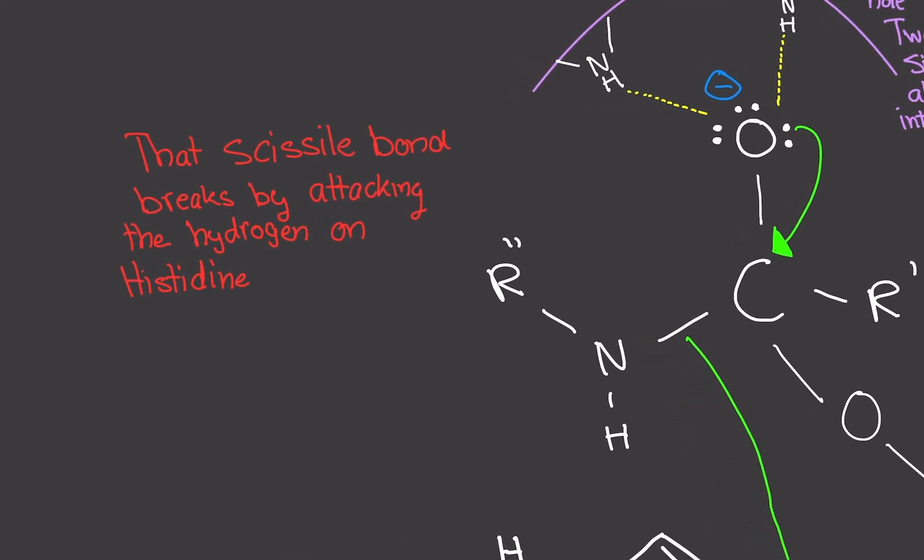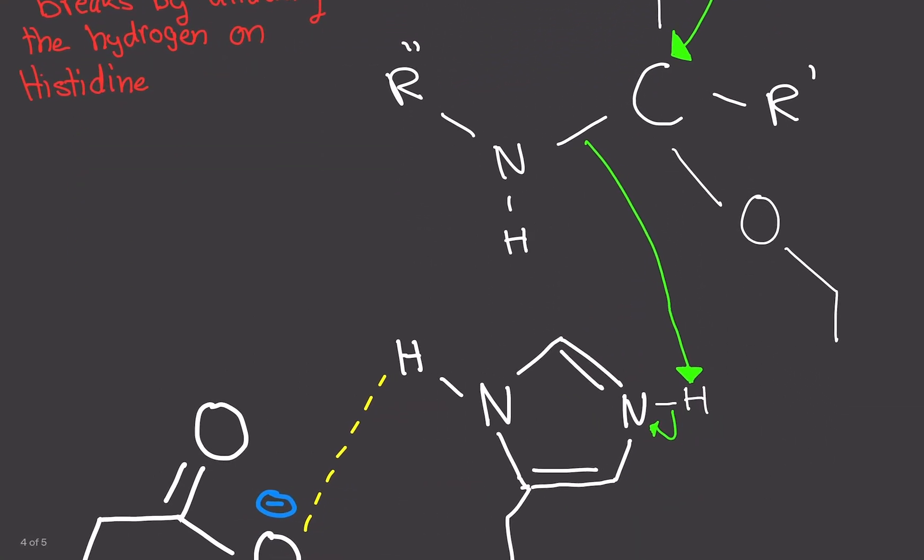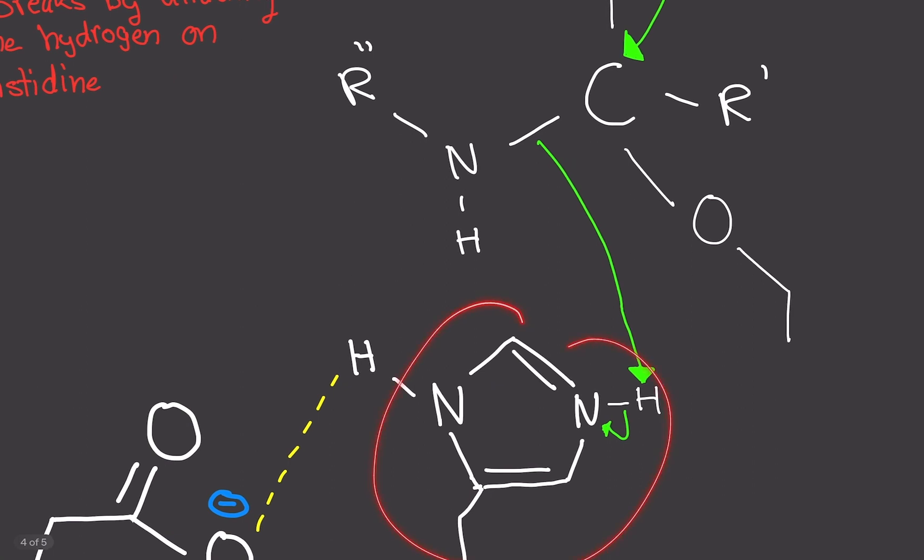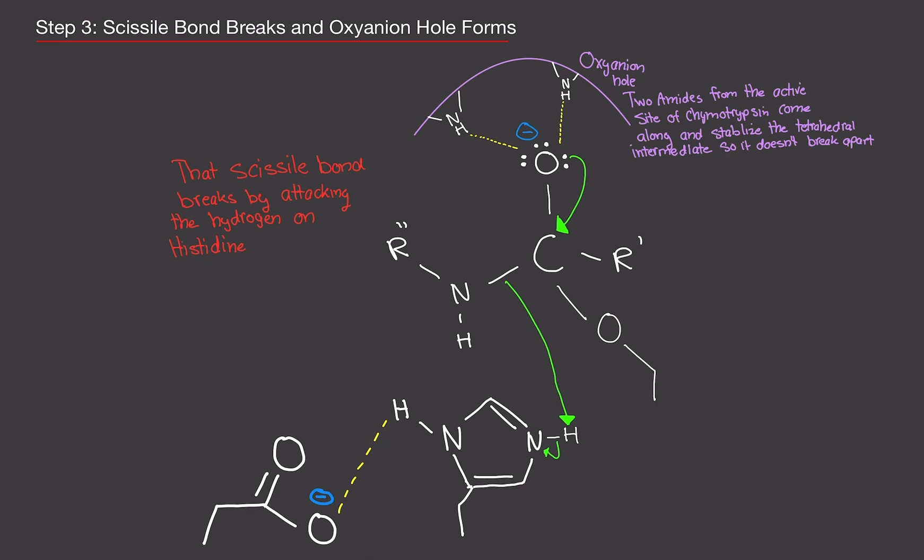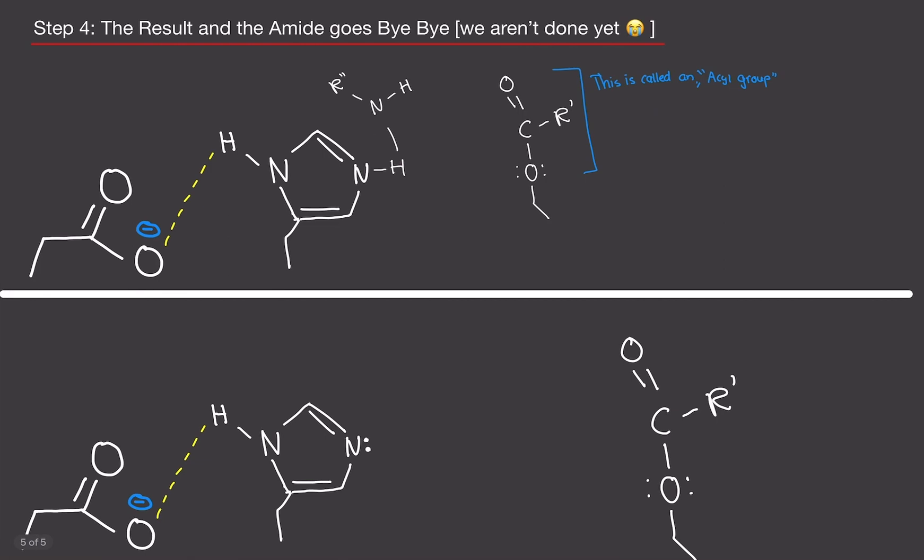So just a little recap here. The scissile bond breaks by attacking the hydrogen on histidine. So this is histidine. This was the scissile bond and we attack the hydrogen. And we move the electrons over to nitrogen. That right there is probably the hardest part of this whole mechanism. So if you understand this, amazing.